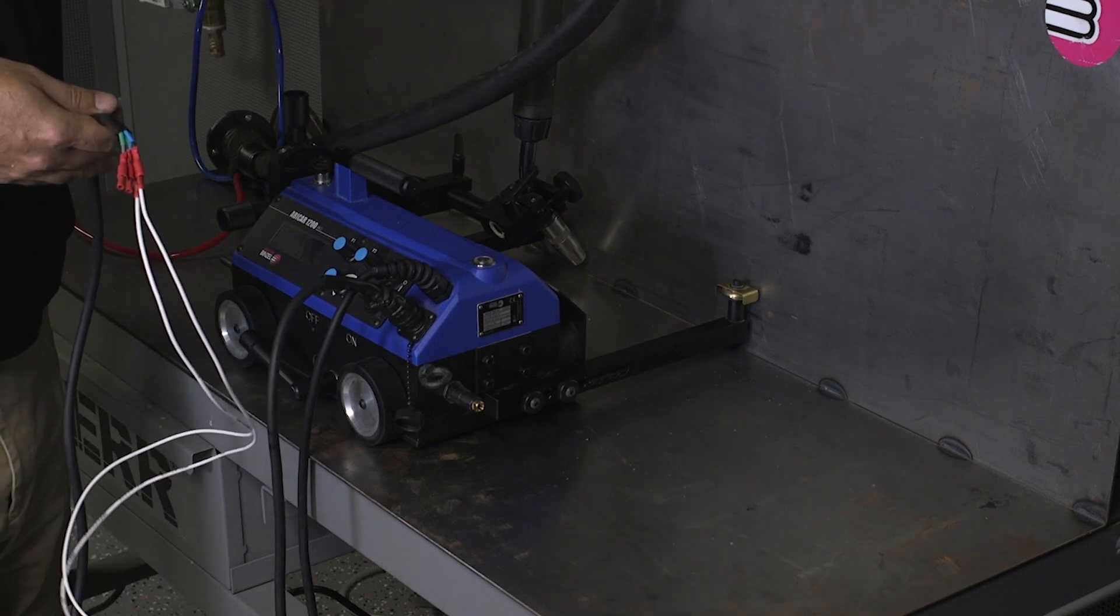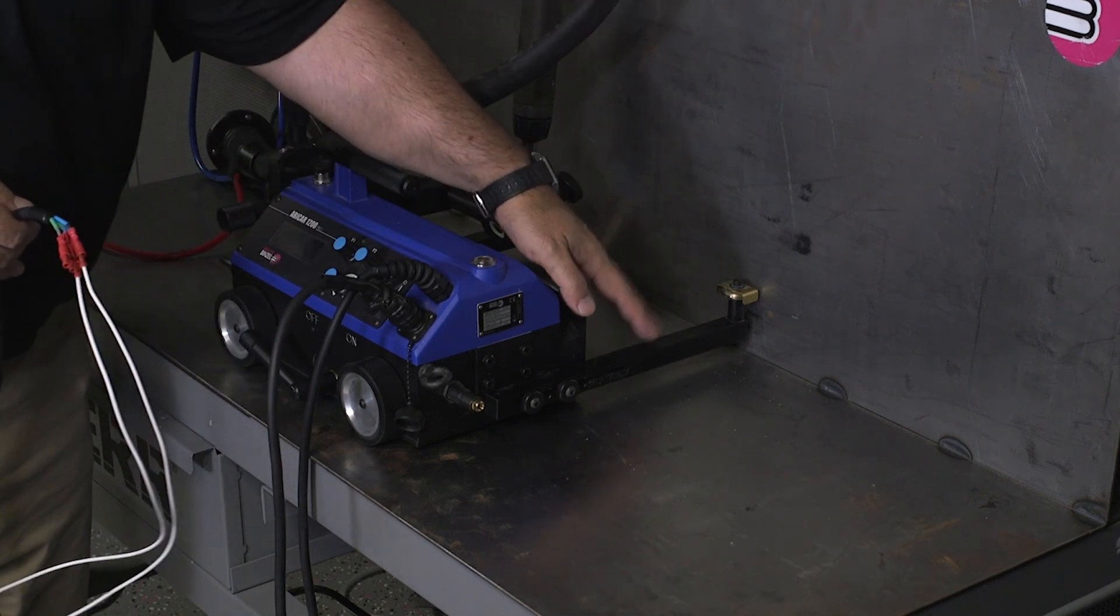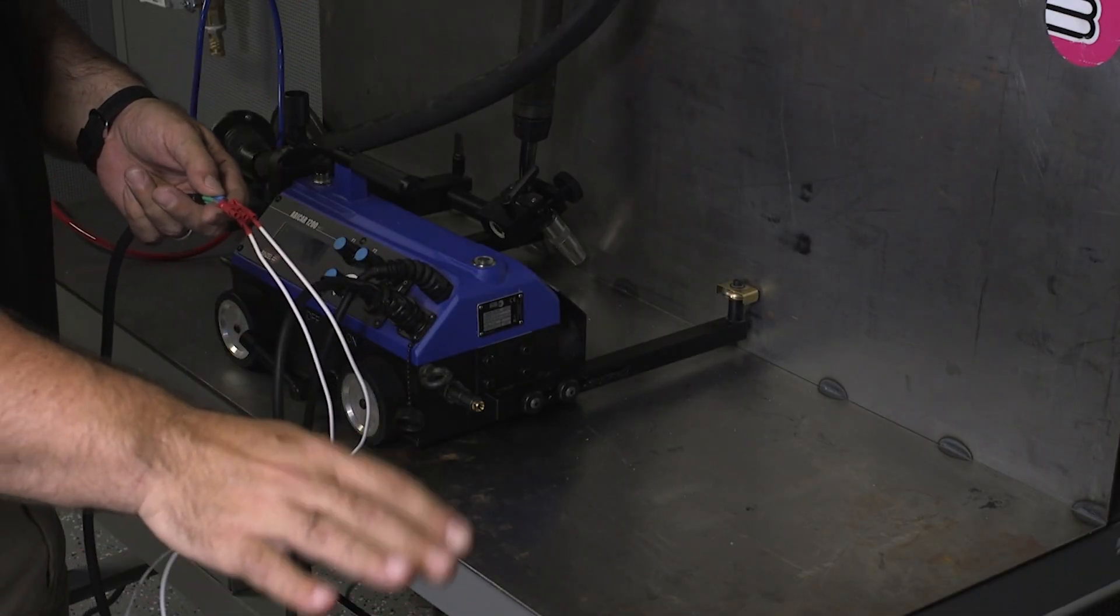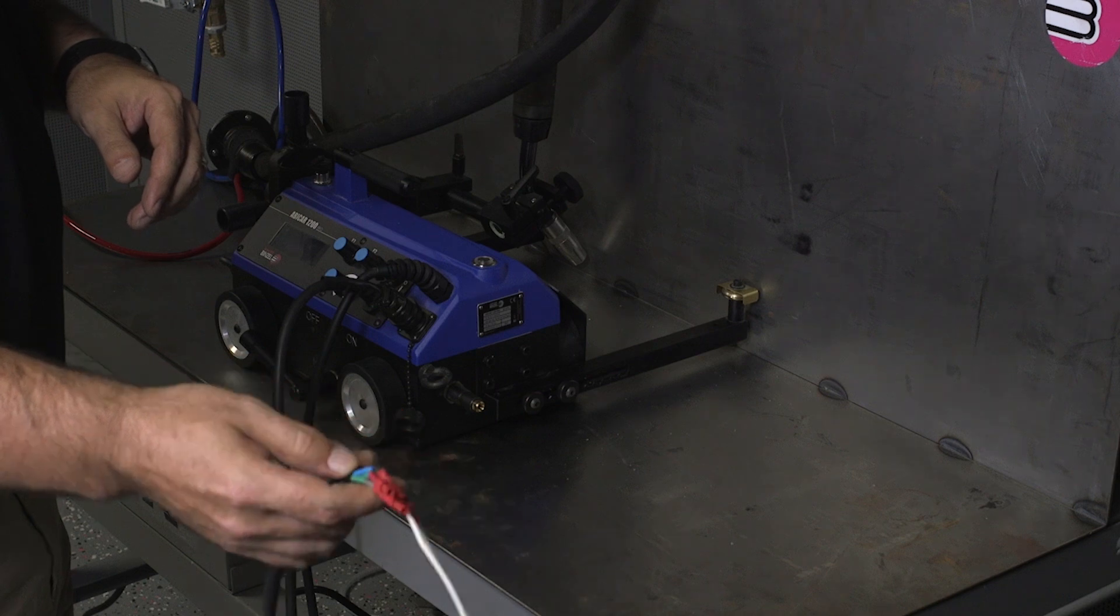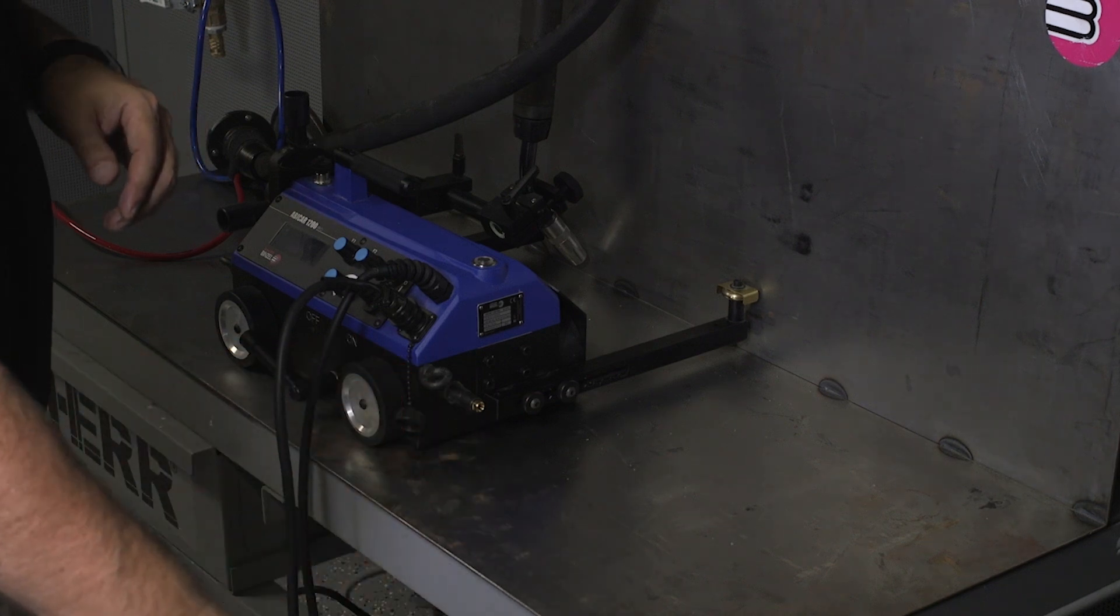We're just using one of our Abicor Benzel AUT torches. We have the power set up, the simple guide arms installed. We're going to use this to send the signal to the welding machine to start and stop the arc. Make sure those are wired correctly. If you have any questions, reach out to us.